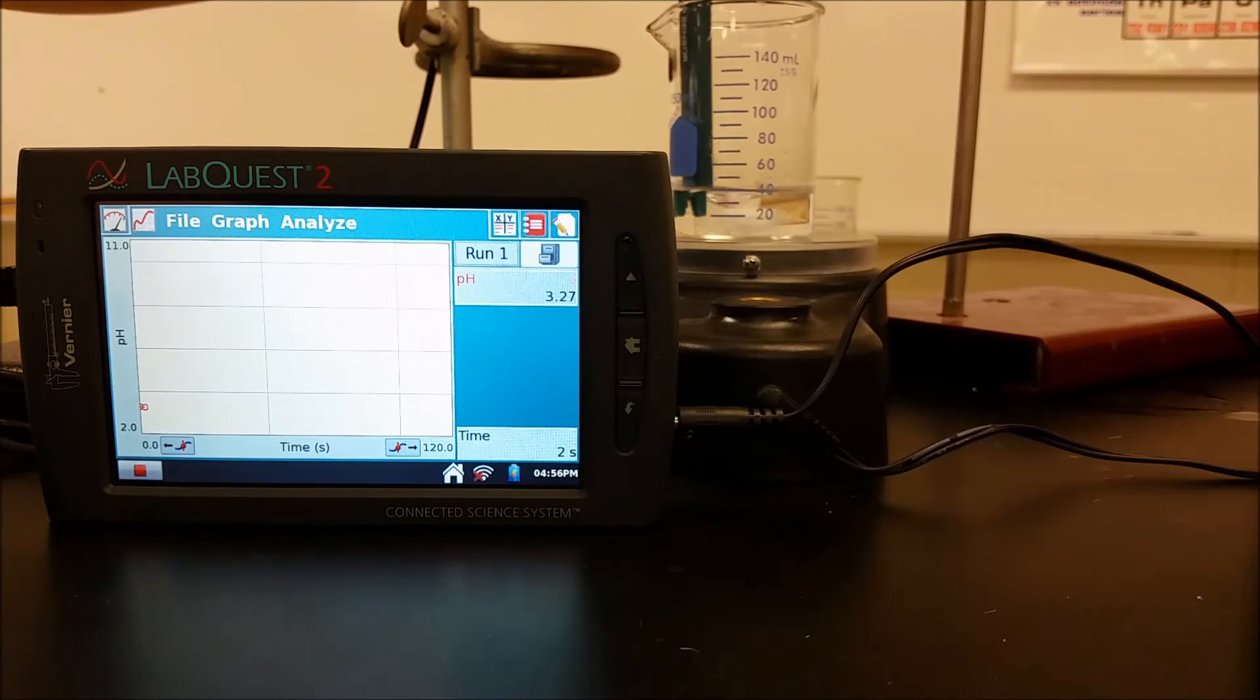So we're starting with our acetic acid again, now I'm adding the phenolphthalein to it, and now I've started the pH meter and the base is coming in. So you can see the pH starting to rise, we're into our buffer region of the titration curve.